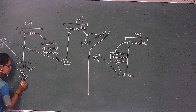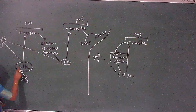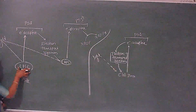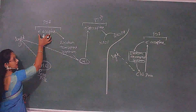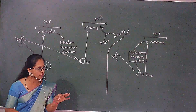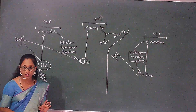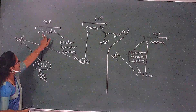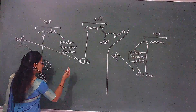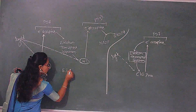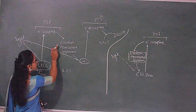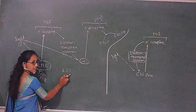It is also called PS2. From the first light harvesting complex, whatever electrons are emitted — who will accept the first electron in case of non-cyclic photophosphorylation? Plastoquinone through pheophytin. So here the first electron is accepted. Next, these electrons will be transported in the electron transport system (ETS), also called ETC.